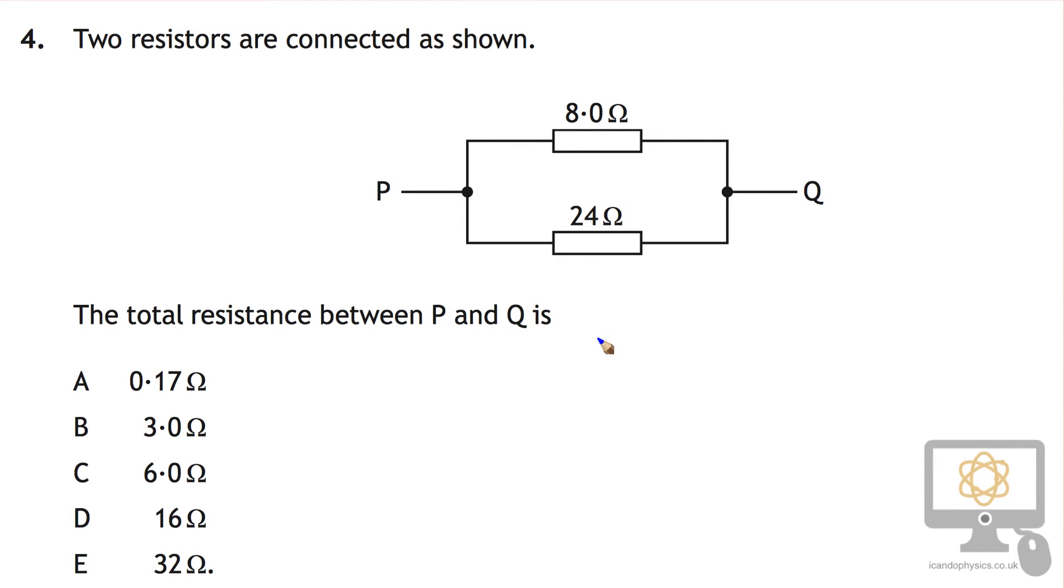But we can't do that in this case, we have to use the parallel resistance formula which is 1 over RT is equal to 1 over R1 plus 1 over R2, and add them that way.